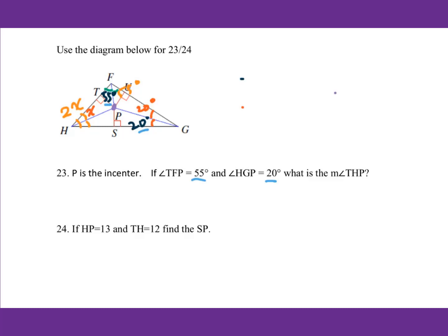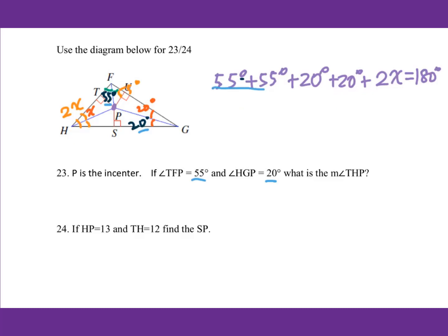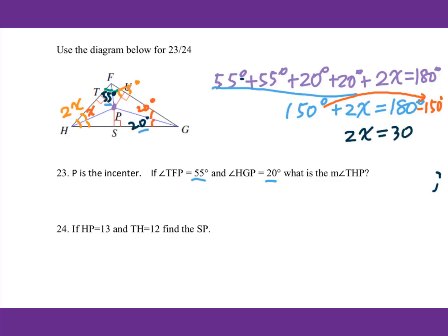For triangle FHG, we set up: 55 plus 55 plus 20 plus 20 plus 2X equals 180 degrees. Combining like terms gives 150 plus 2X equals 180 degrees. Subtract 150 from both sides: 2X equals 30. Therefore, X equals 15 degrees.